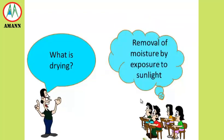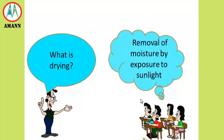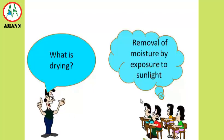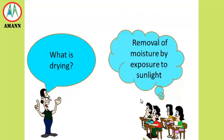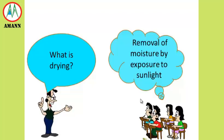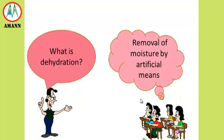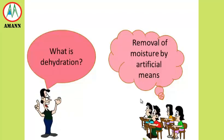Drying is the process by which the removal of moisture is effected by exposure of the products to the natural heat of the sun or current of air. While dehydration is the process of removing moisture from the product by artificial means.